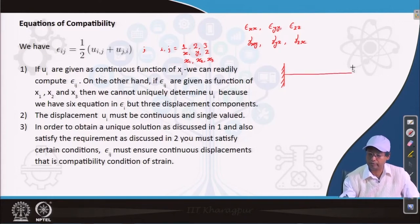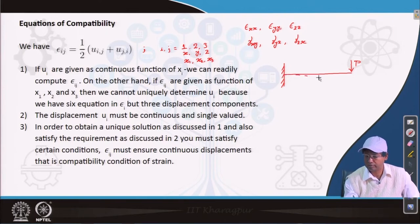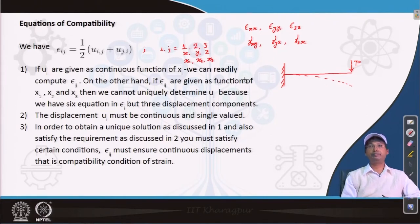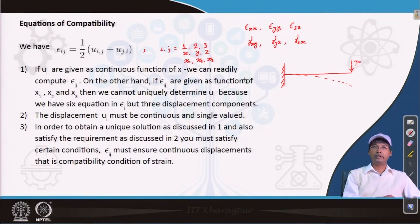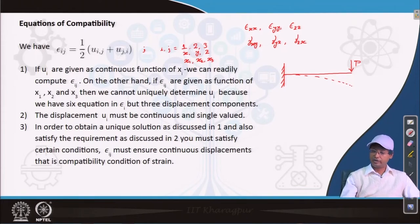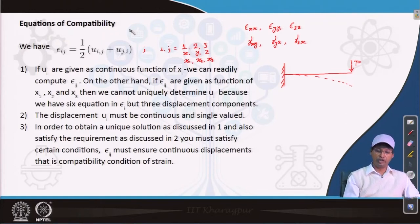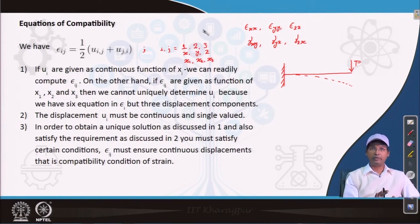Consider a simple example: a cantilever beam loaded at its tip by P. The structure will bend. The displacement and slope are always continuous along the length of the beam, but while we define them mathematically that may not be the case. If continuity does not hold, that creates a problem. These are the points that mathematically say continuity must hold, and to ensure that we must satisfy a set of equations known as the compatibility equations — to keep the relation between x_1, x_2, x_3 and the 6 strain components unique.